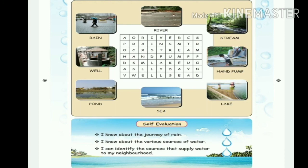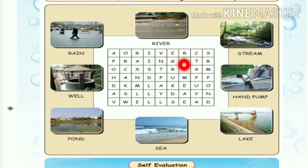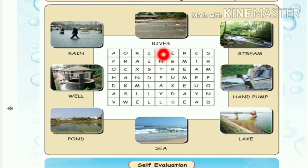Page number 66: in the crossword, circle the words given below the picture. Pictures given below are river, stream, hand pump, lake, sea, pond, well. In this crossword you can circle the words — rain R-A-I-N, river, stream, hand pump, lake, sea, pond, well. This is how you do the homework.